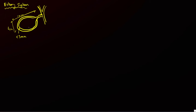Gallstones are commonly seen with an incidence of 10 to 20 percent. Most are made up of cholesterol or pigmented gallstones — precipitation of calcium bilirubinate — but the majority end up being mixed. On ultrasound they're echogenic with posterior shadowing, though shadowing may not be seen if the stone is less than 3 millimeters. On MR imaging all gallstones will be T2 hypointense; T1 appearance is variable — purely pigmented stones are T1 hyperintense, while mixed stones can be hyper- or hypointense.